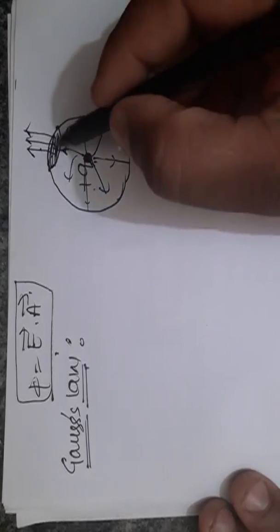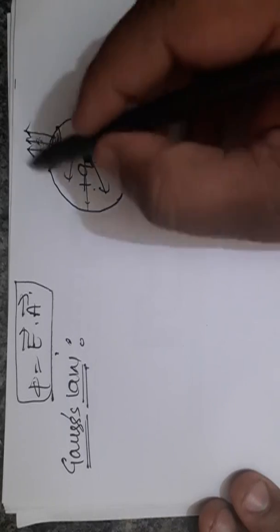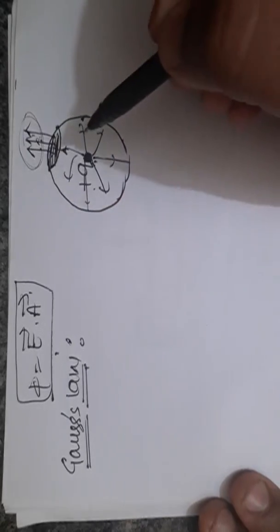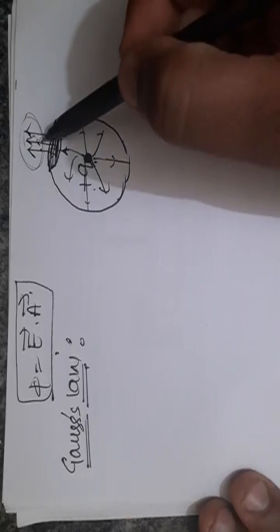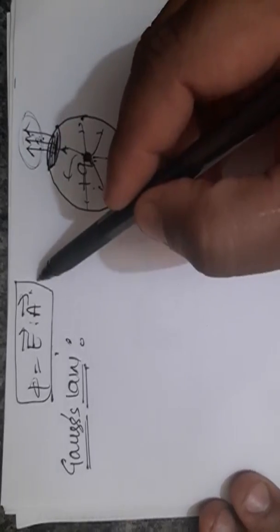So that is called, if the normal, this side, lines are passing normally, it means this is called electric flux. Now to calculate the electric flux, I have a formula E dot A. But instead of this...